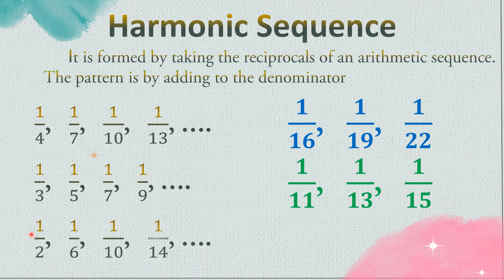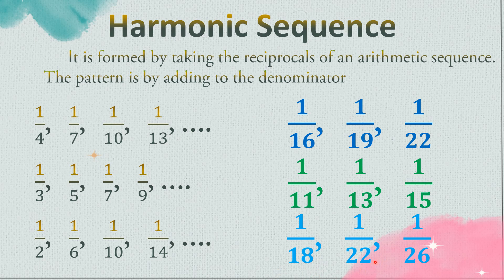Third example: 1/2, 1/6, 1/10, and 1/14. The denominators are 2, 6, 10, and 14 — the pattern is adding 4. So: 2 plus 4 is 6, plus 4 is 10, plus 4 is 14. The next three terms are: 14 plus 4 is 18, so 1/18; plus 4 is 22, so 1/22; plus 4 is 26, so 1/26.